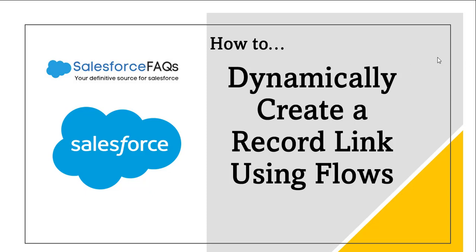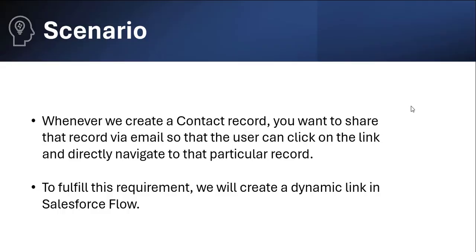Let's take a scenario to understand the dynamic link. Whenever we create a contact record — you can create a record on any object — after creating that contact record, you want to share that record via email so that any other user can click on that link and directly navigate to that particular record. To share this record, we need to create a dynamic link and attach it to that particular record, so that whenever another user clicks on that link, they will be redirected to that particular record. To fulfill this requirement, we will create a dynamic link in Salesforce flow.